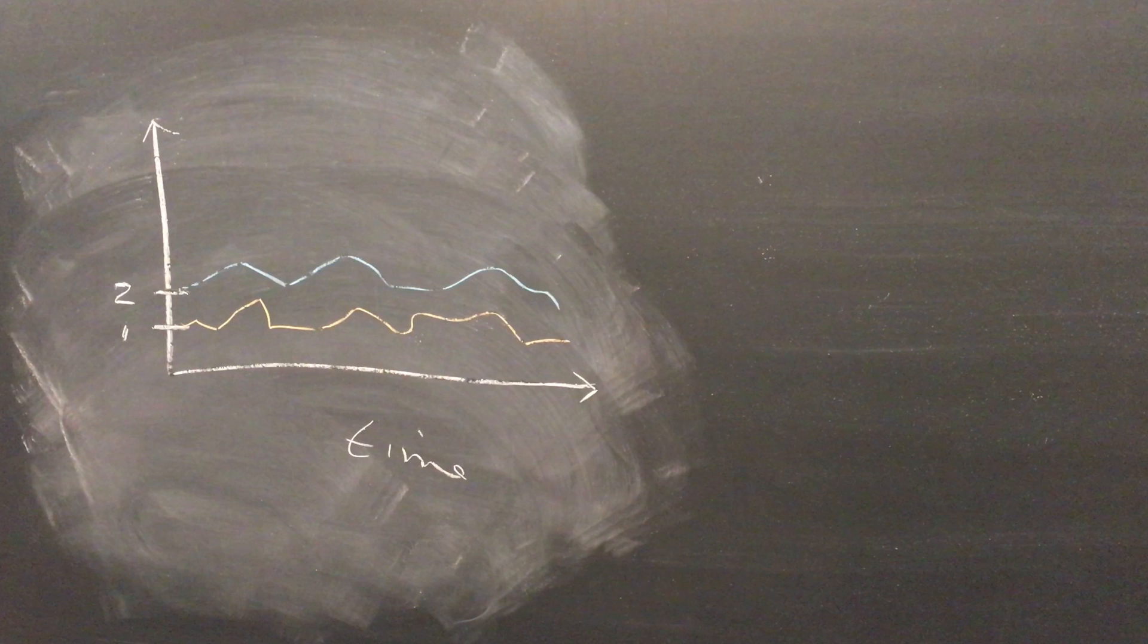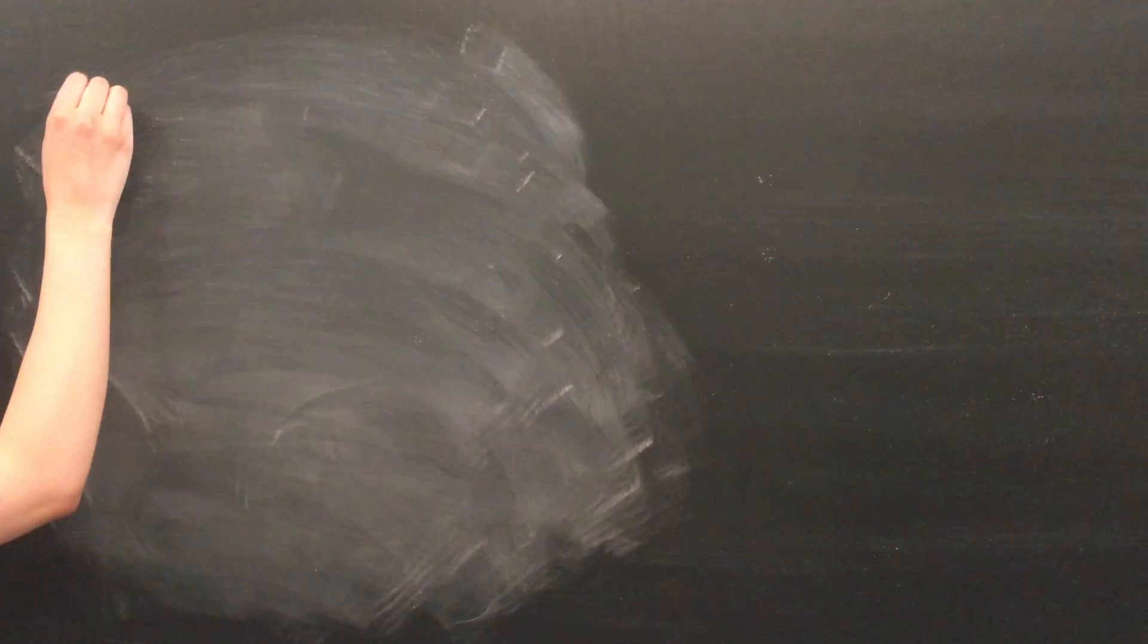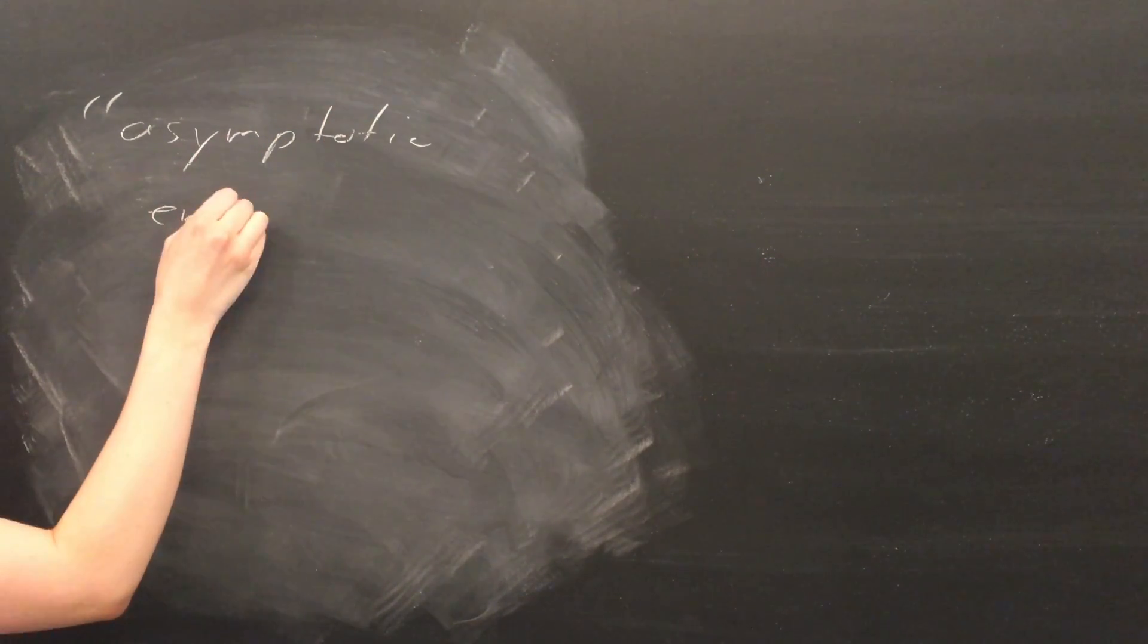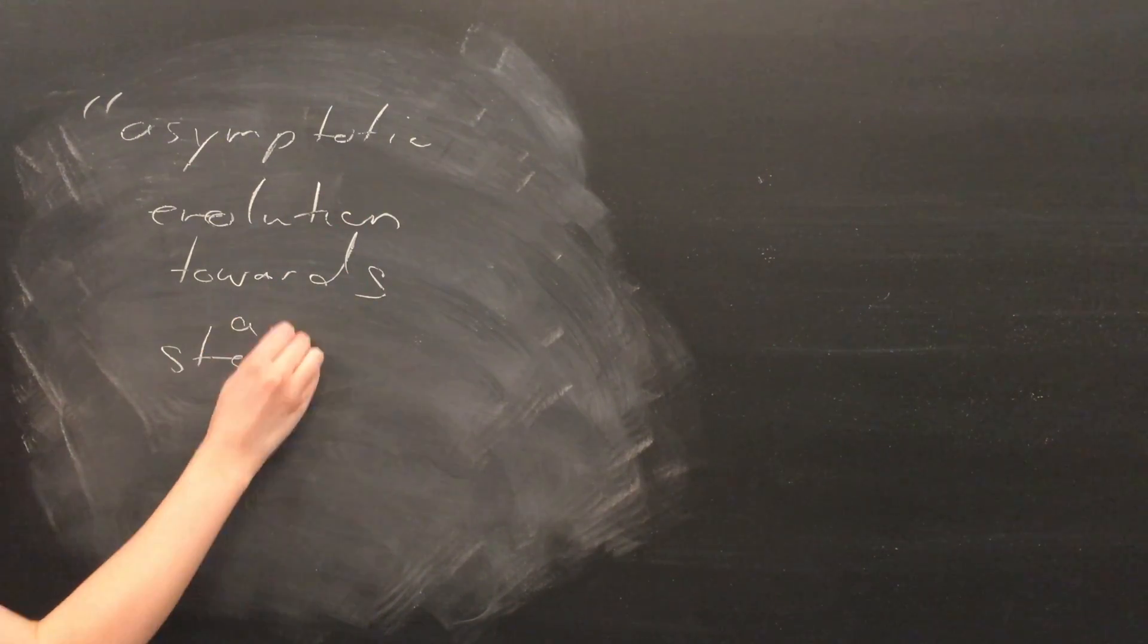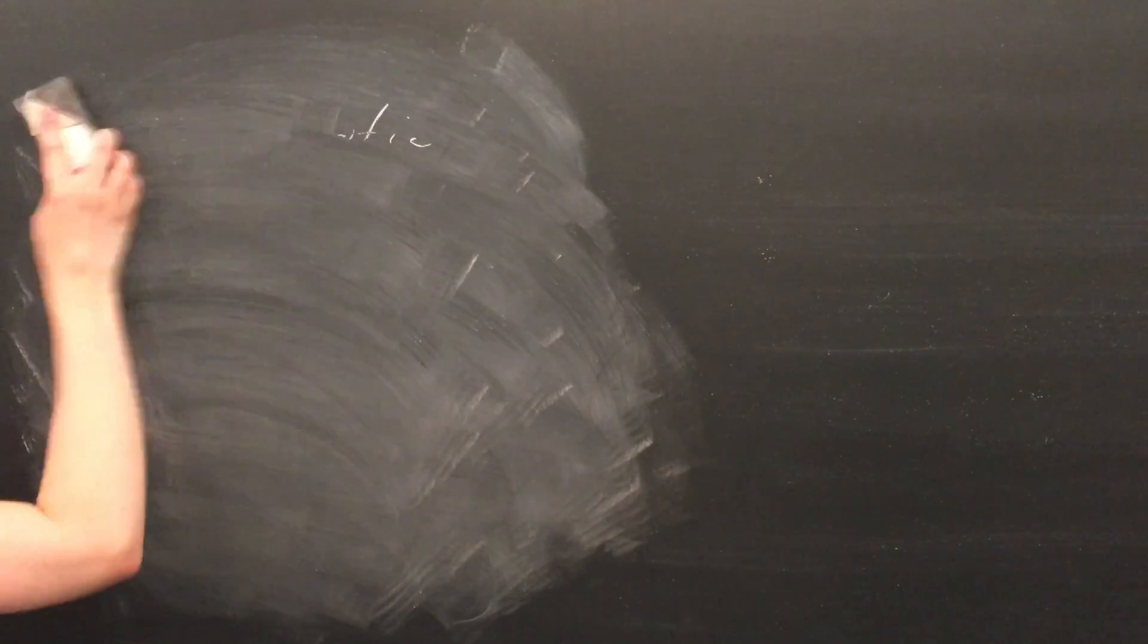You can get a taste of what a composition produced by this program sounds like by listening to the opening of Gendy III. Although it might not be immediately apparent when you are listening to this piece, the work is uniformly logically coherent and evolves en masse over time throughout the piece's progression, in what the composer describes as an asymptotic evolution towards a stable state.